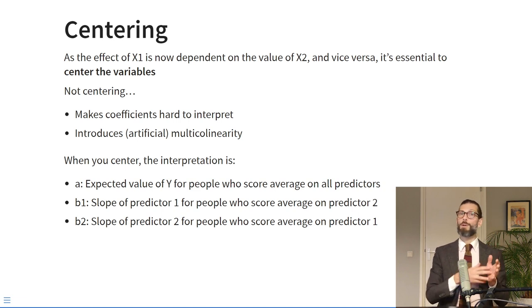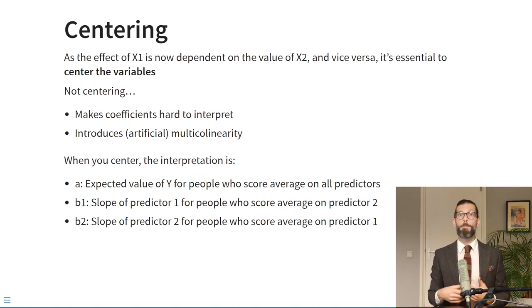Centering becomes extremely important for the interpretation of our coefficients when we have an interaction term in the model. Because the effect of x1 now depends on the value of x2 and vice versa, it's really important that those values have a meaningful reference point. If we don't center the variables, coefficients can be very hard to interpret because they may not have a meaningful zero point. Moreover, not centering often means variables go from 0 to some positive number, and multiplying them creates a product term that goes from 0 to a very large positive number, producing artificial multicollinearity. If we center the variables, we don't introduce that artificial multicollinearity.